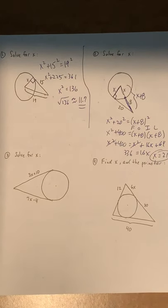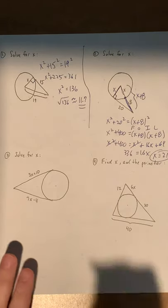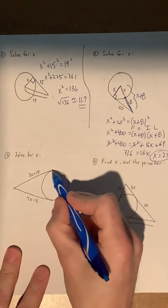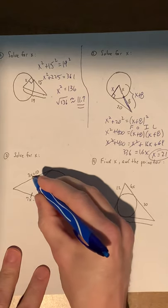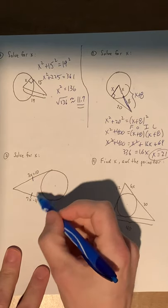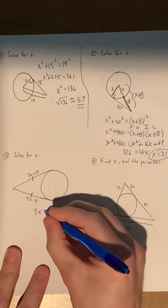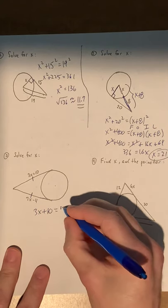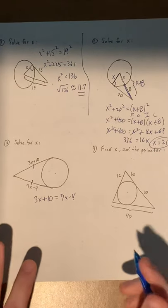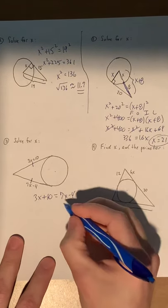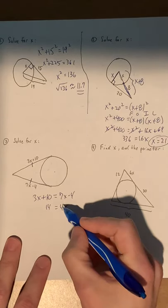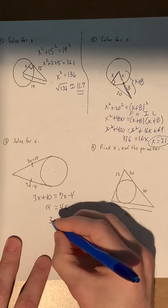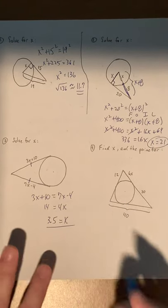Let's take a look at number 3. All right, number 3, we're going to use a second property from the other side of the notes. Since these two segments are coming from the same external point here, they are congruent. So therefore, to solve for x, all you have to do is set these equal. And a little bit of algebra here. Add 4 to get 14, subtract your x to get 4x. And dividing by 4 should give you 3.5 or 3.5 for x.